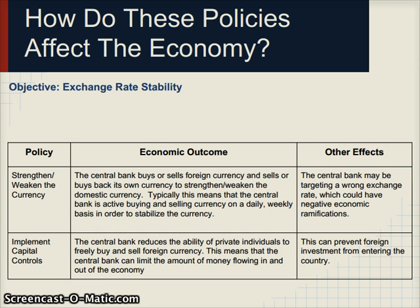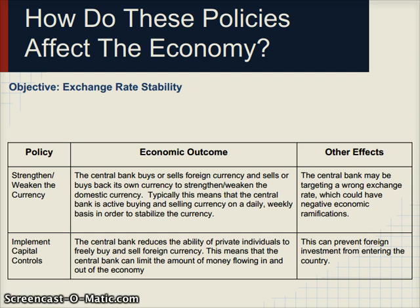A third policy objective could be exchange rate stability. If there's a lot of volatility — for example a currency moving between 5, 10, and 15 pesos to 1 dollar — the central bank might target a trading band such as 9 to 11 pesos. It would intervene directly, buying or selling the currency if it moves outside the band, potentially on a daily or weekly basis. The problem is the central bank may be targeting the wrong rate, leading to undervaluation or overvaluation and economic imbalances down the road.